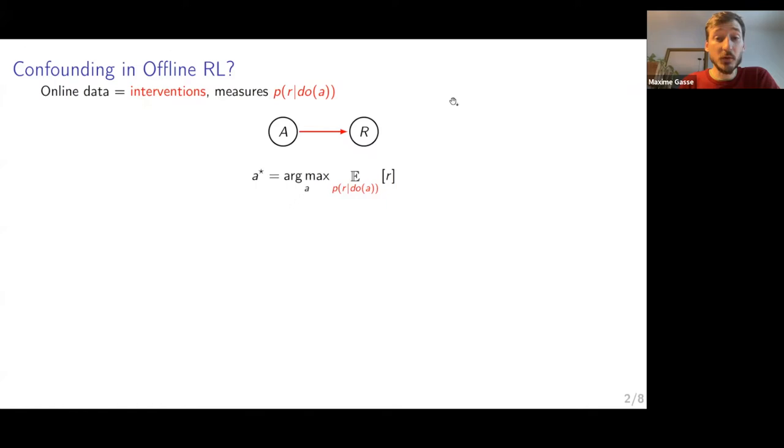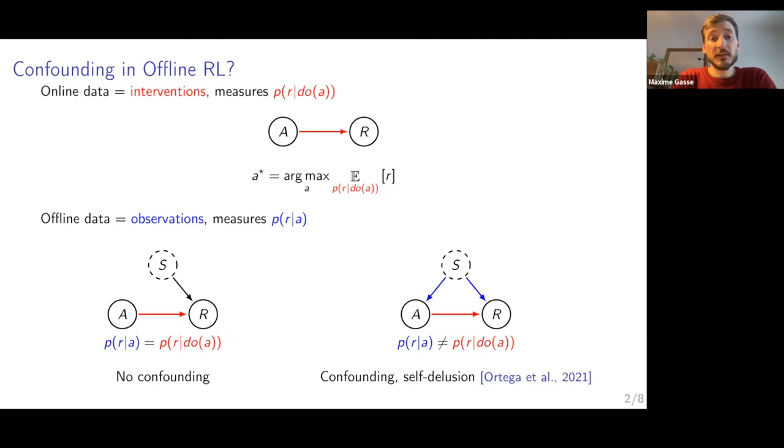If you have offline data, on the other hand, it's not the learning agent itself that acts on the system. What you measure is observations of actions and reward. And this might be different from measuring interventions. Imagine that this bandit problem actually has a hidden latent state S. The latent state affects the reward, and your action also affects the reward.